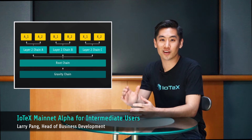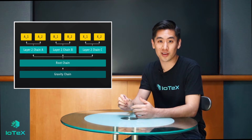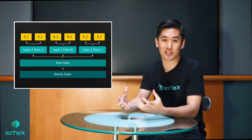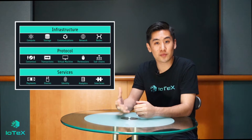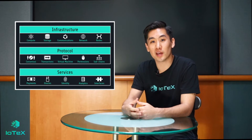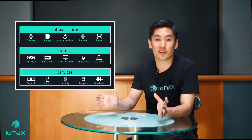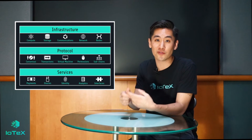My name is Larry, and I'm going to be providing a more in-depth overview of Mainnet Alpha. To set some context, IoTeX is not a single blockchain, but rather a network of blockchains that each have a unique role. Mainnet Alpha introduces the root chain, also known as layer one, which provides Roll-DPoS consensus and P2P networking resources for the entire network, meaning business logic can be focused on layer two chains.